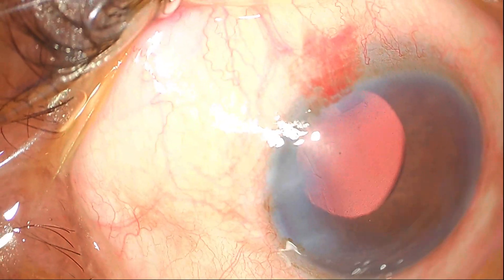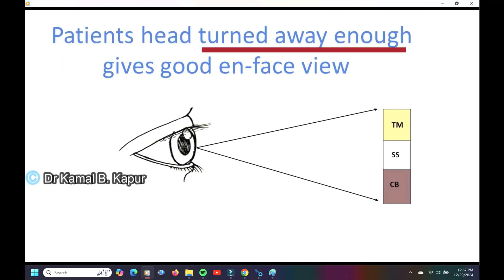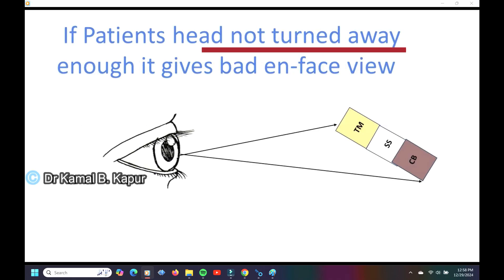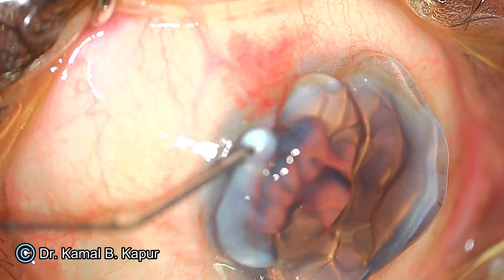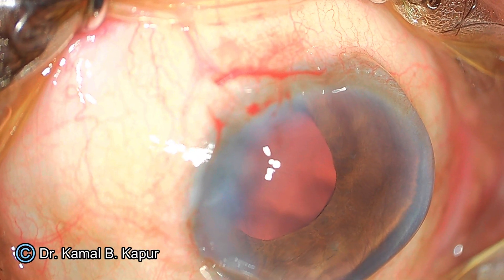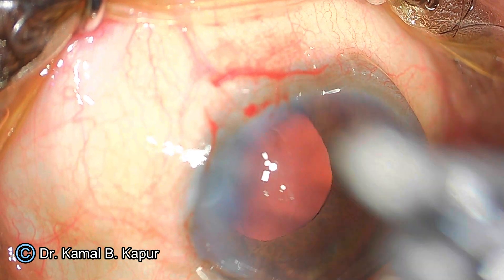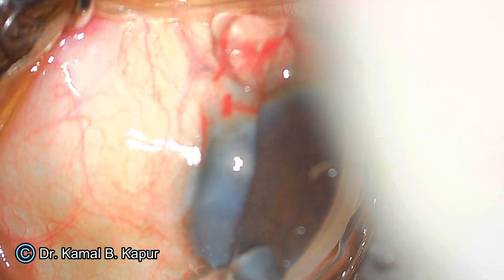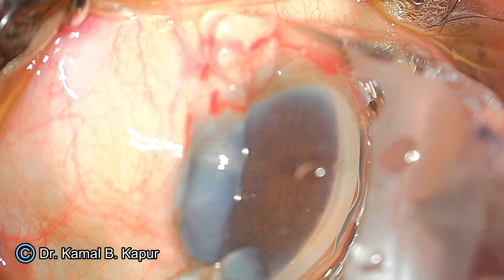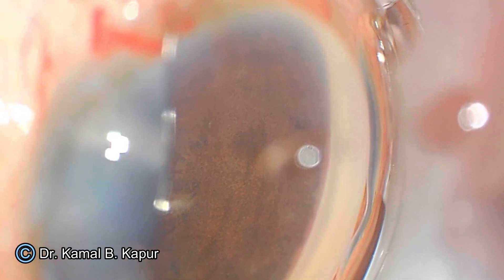Tilt the patient's head away from you by approximately 35 to 45 degrees. Shifting the patient's head gives a very good view of the trabecular meshwork; without doing so, you will have a bad en-face view. Apply more viscoelastic onto the cornea, ensuring no blood or air bubbles, then place the gonioprism lens on the cornea. Zoom in to confirm a very clear view of the TM.